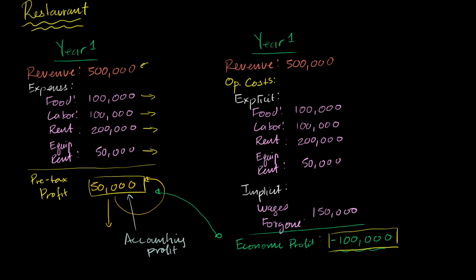Let's think about how we would have accounted for things if instead of renting our building for $200,000, we bought the building for $2 million. How would that have shown up from an accounting profit point of view and an economic profit point of view?